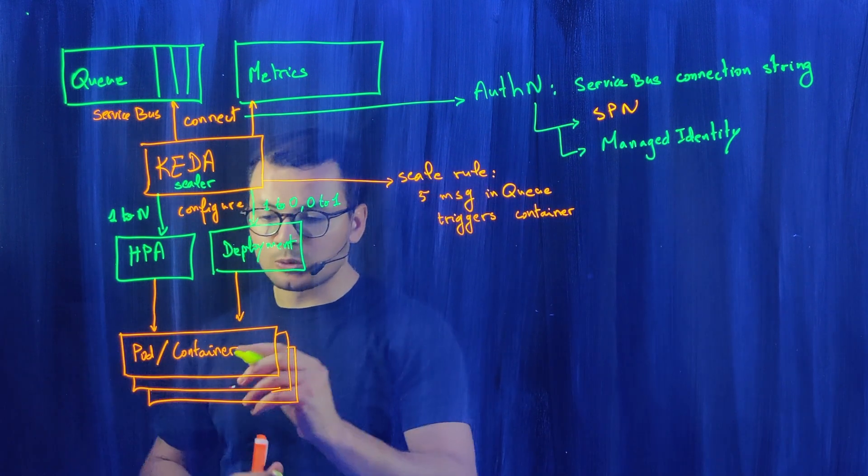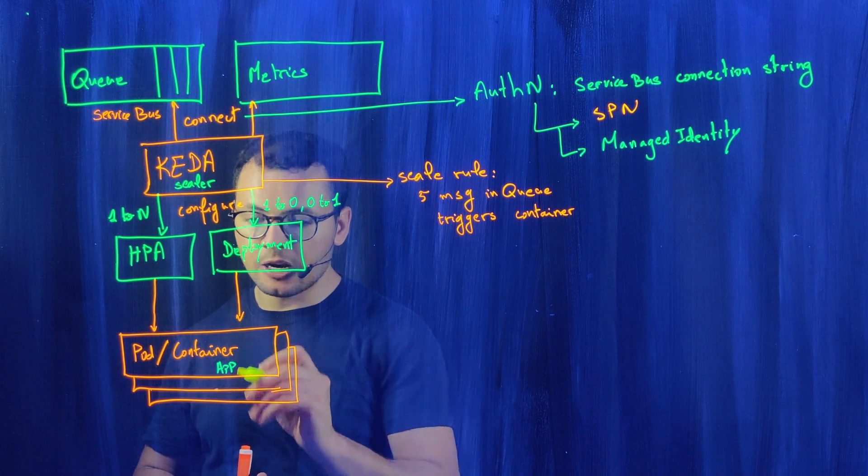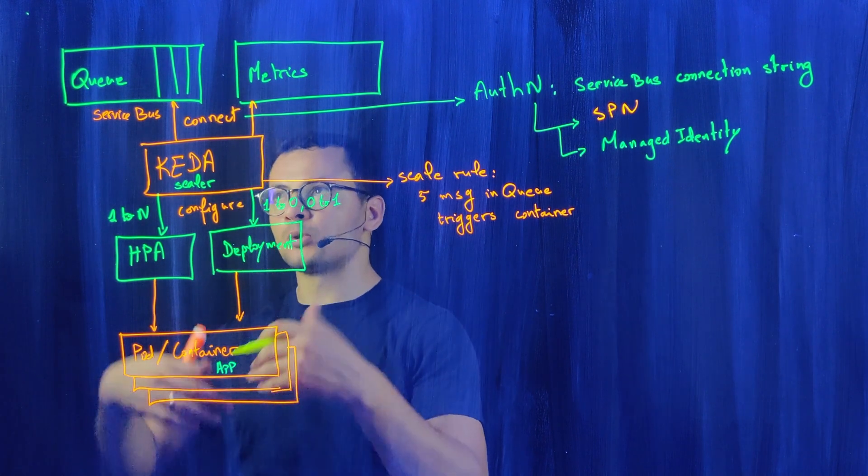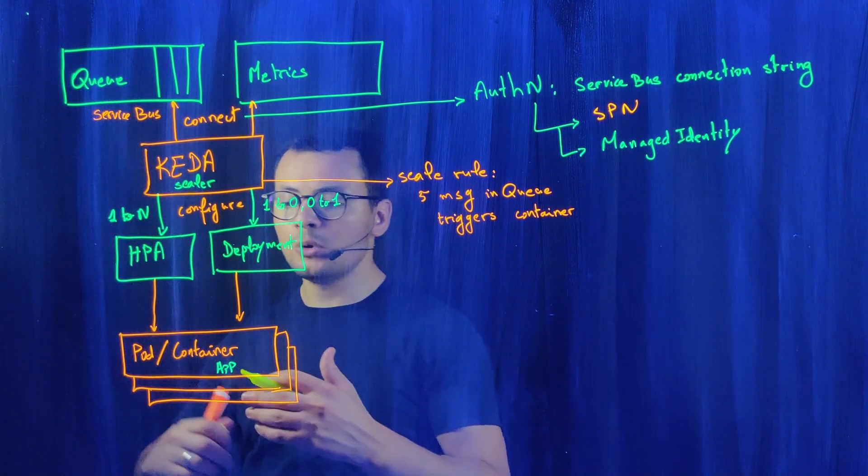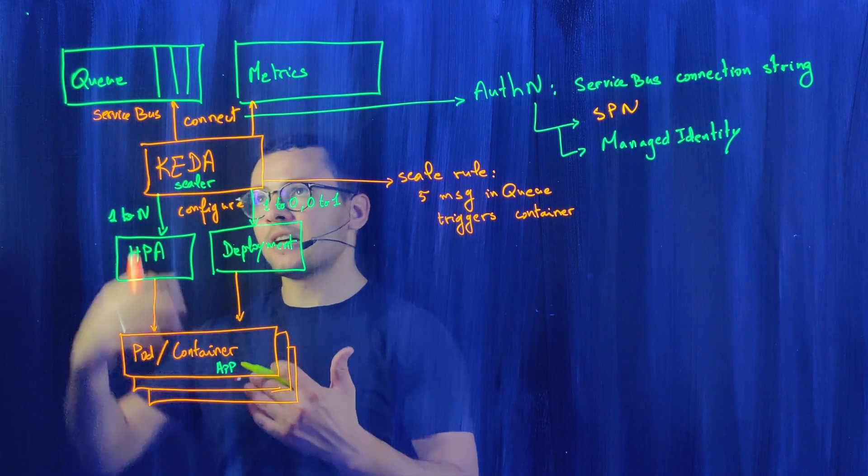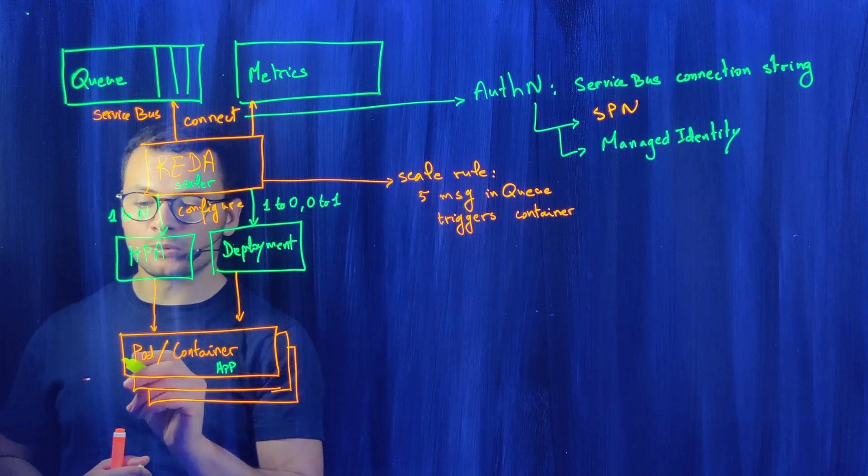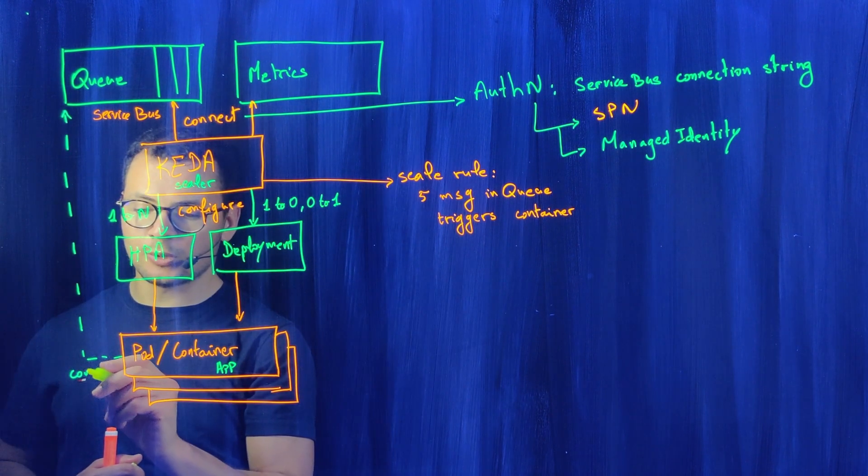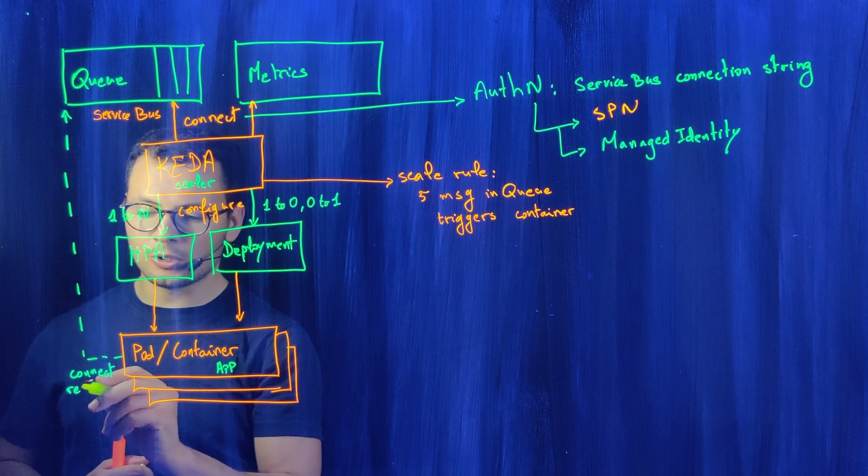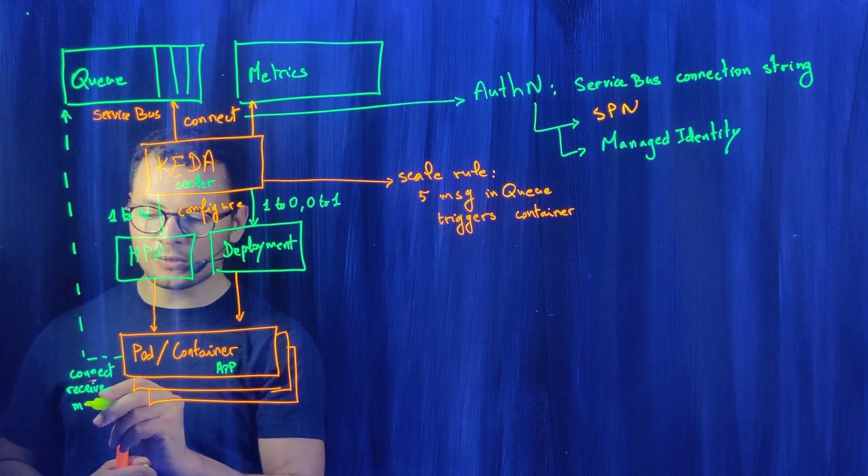typically what I want to do is that maybe I have an application in here. That application, because it was triggered by a message from the queue, will go to process that message. So my application needs to connect to that queue. It will perform a connect operation and receive the message from the queue.